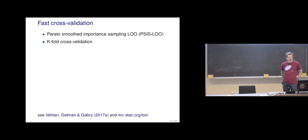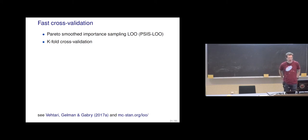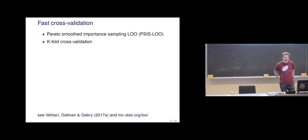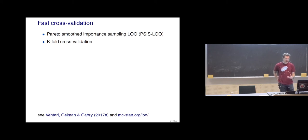The naive implementation would require that if we have n observations, we would need to do model fitting n times, each time leaving one observation out. But now we can use this Pareto-smoothed importance sampling leave-one-out cross-validation — quite a long name — to make very fast computation given just draws from the full data posterior. K-fold cross-validation is another way, which is also often needed when we have more structure in the data.